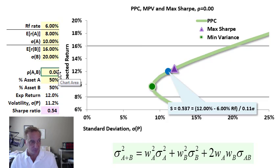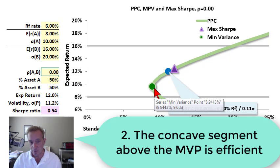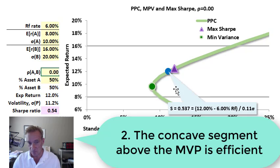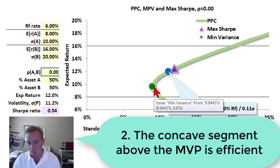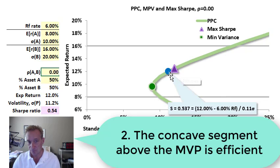The second thing is that the minimum variance portfolio slices the portfolio possibilities curve in half - that's vertical halves - such that above this minimum variance portfolio is the concave segment, below it is the convex segment.